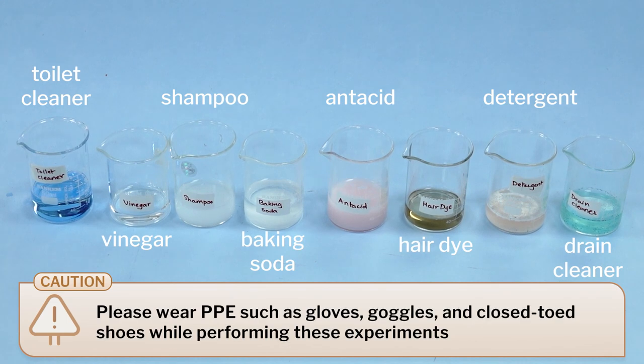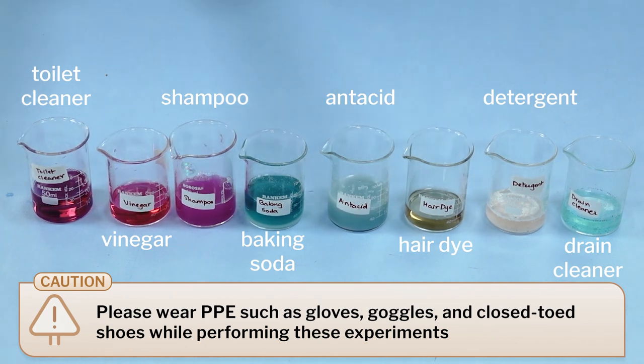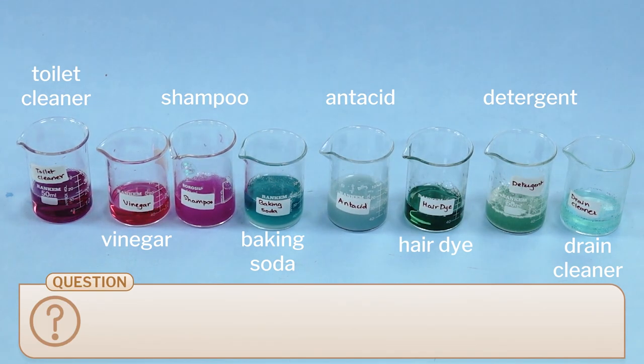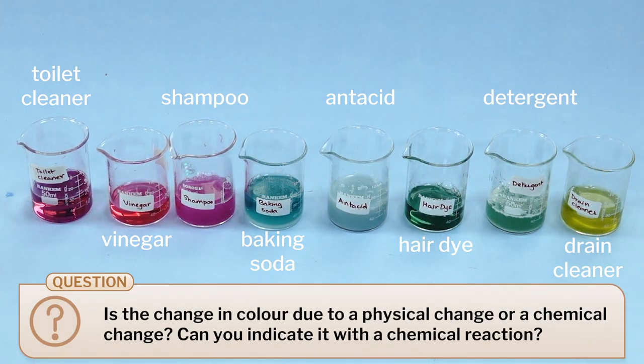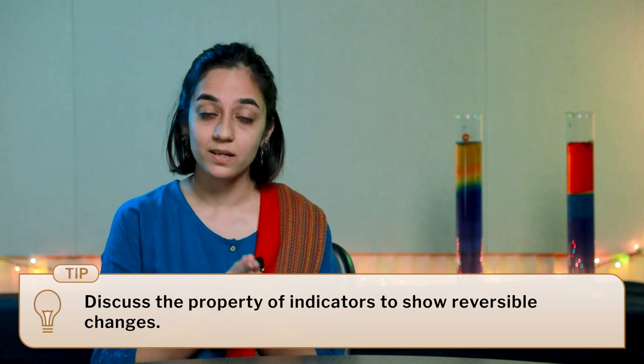If possible, repeat this activity with different indicators like the universal indicator and see how the colour changes for different substances. A universal indicator will give you an array of colours for different substances, which makes the distinction between weak and strong acids and bases even clearer. This activity helped us understand the differences in the properties of acids and bases, understand their occurrence in nature, and find out the role of an indicator in determining acidity and basicity.